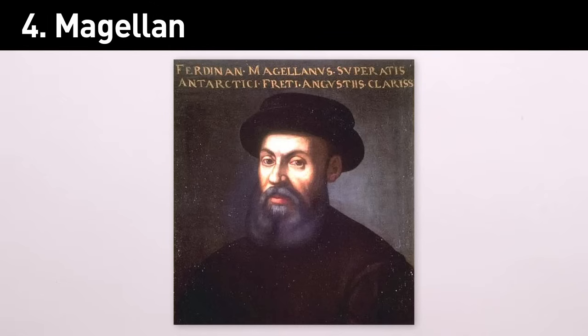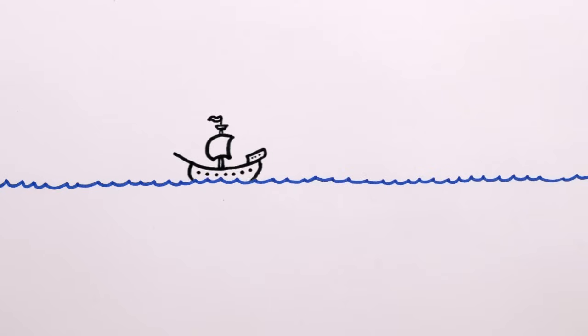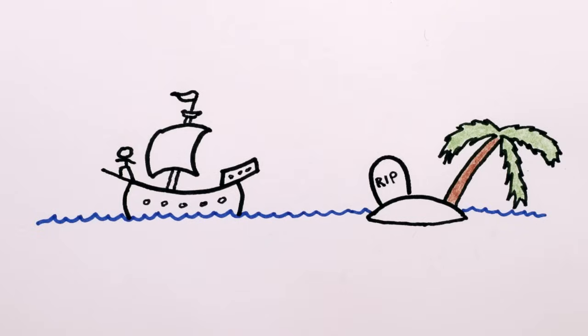4. Ferdinand Magellan, and many people afterwards, circumnavigated the Earth. That means he left headed west, continued going west, and came back to where he started, still going west. Actually, Magellan was dead, but one of his ships, led by Juan Sebastian Elcano, finished the journey.